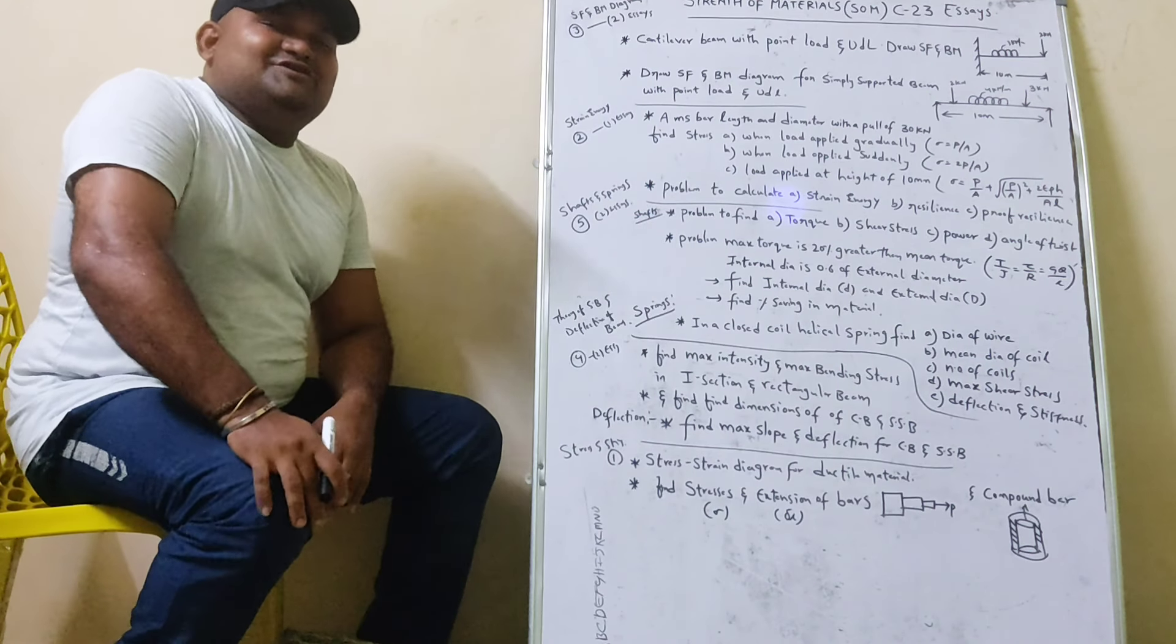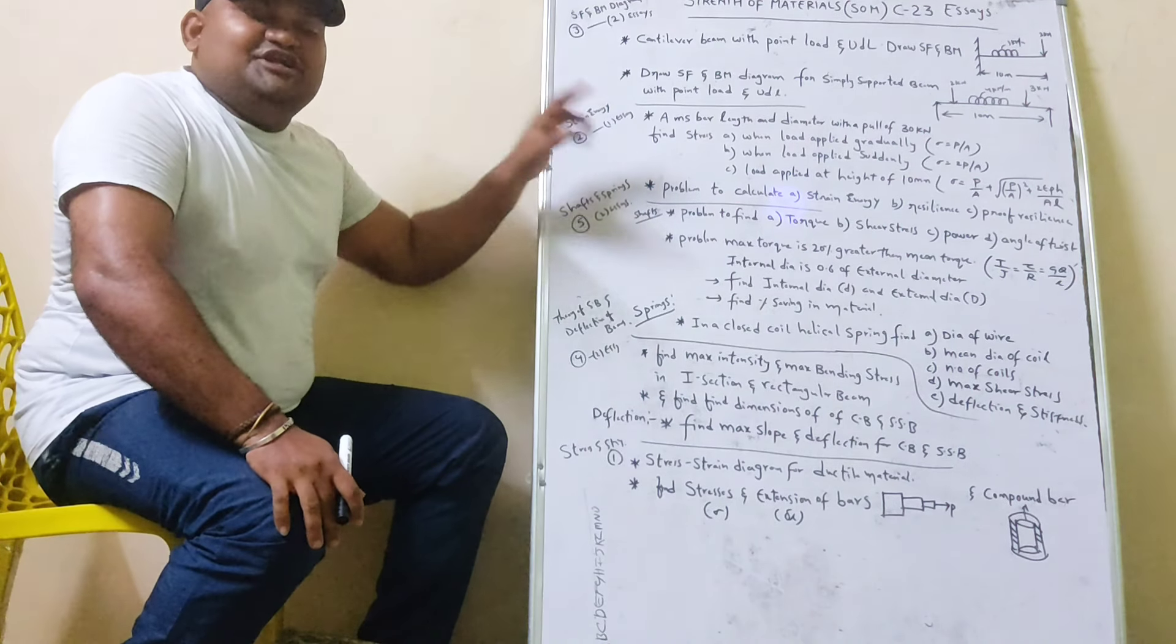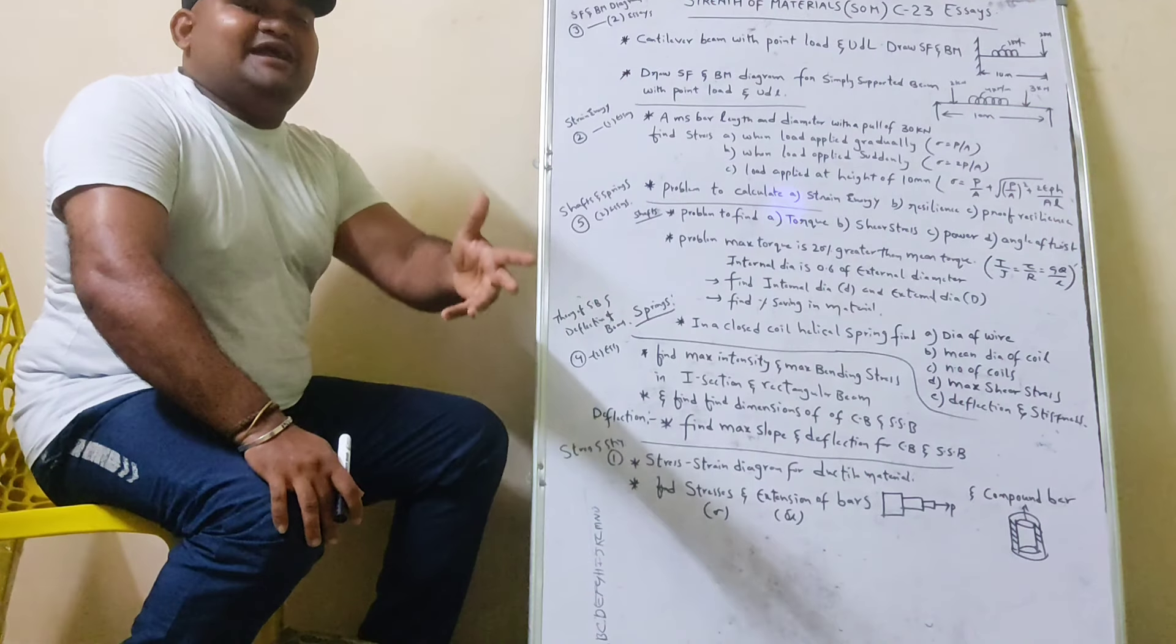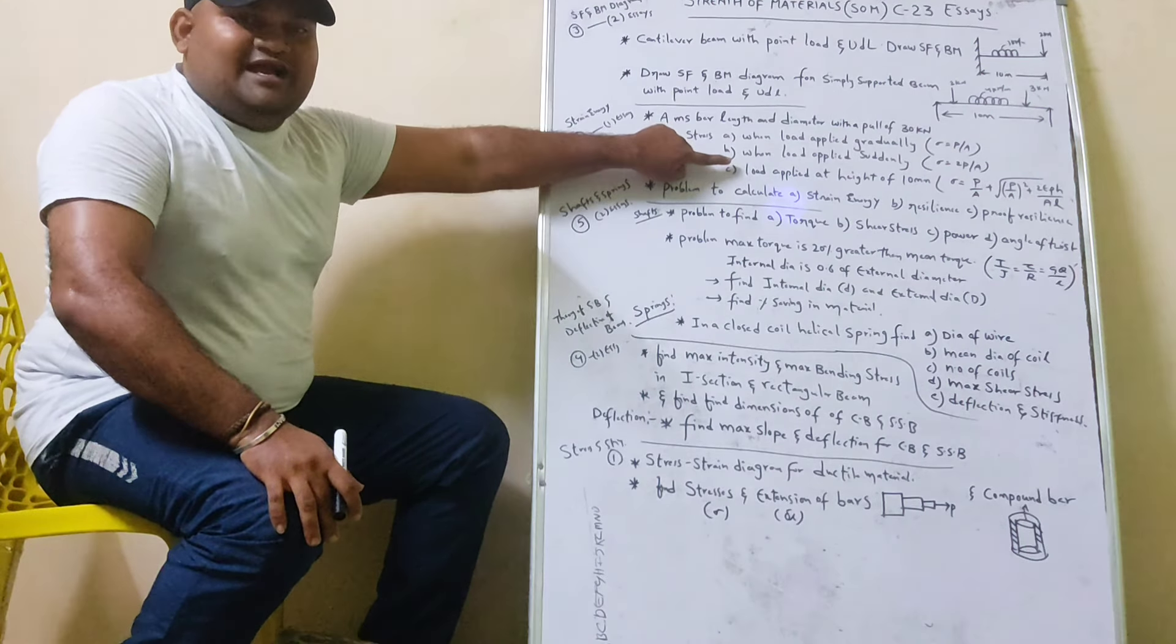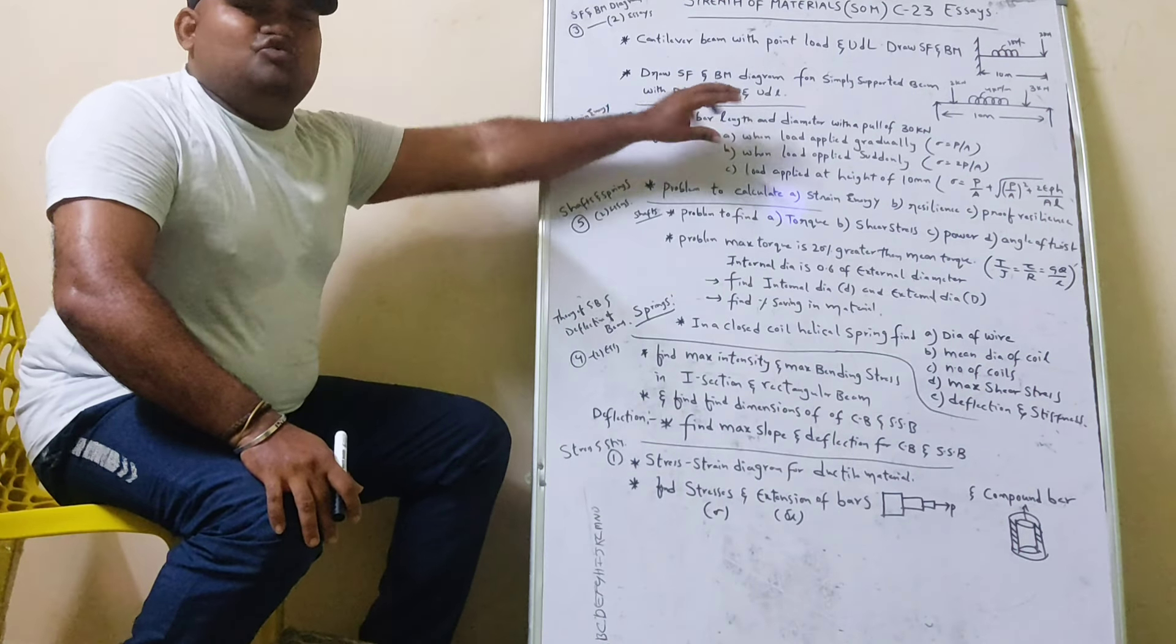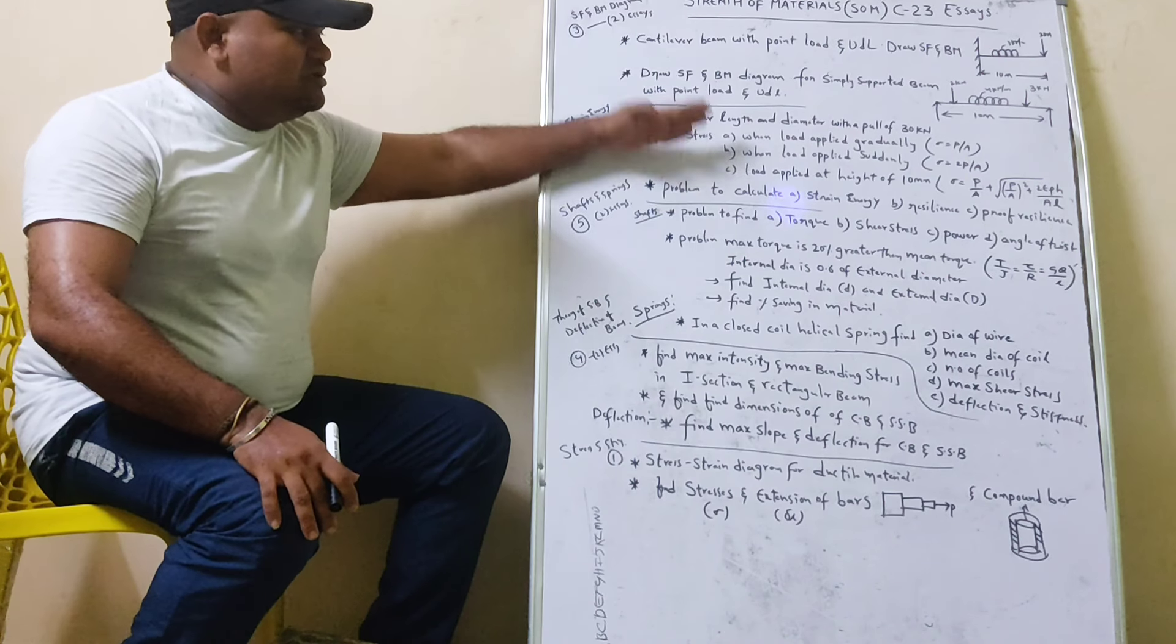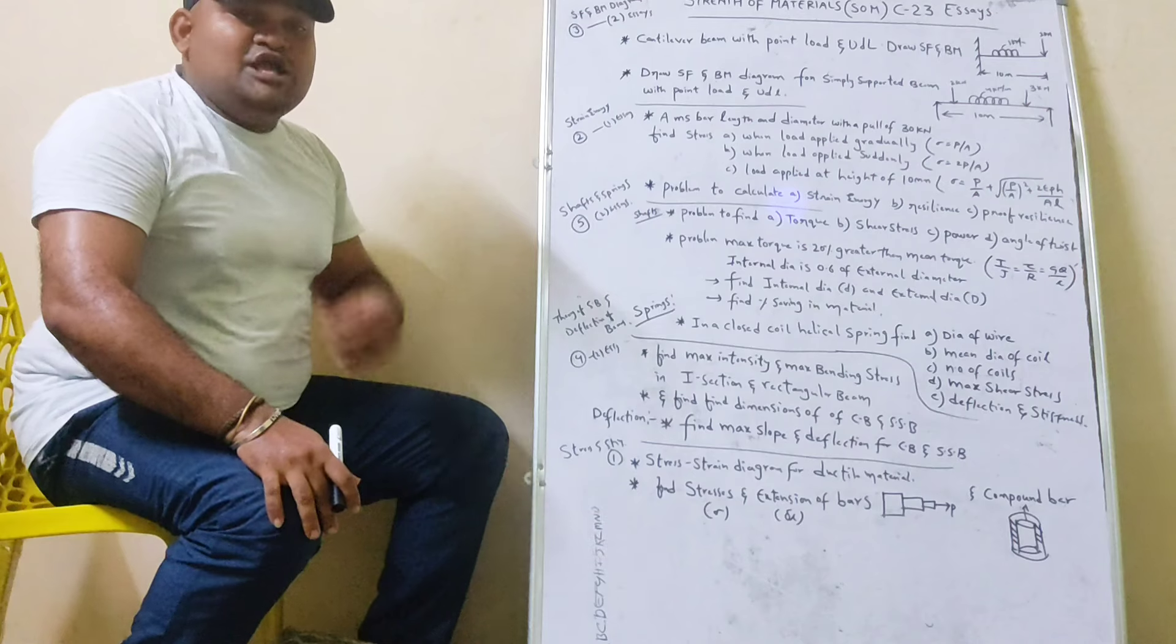Second most important chapter. I'm saying that there are three types of loads. One is gradually applied and suddenly applied. Three is the impact. Gradually applied and P by A formula. Suddenly applied and 2P by A formula. And the impact of P by A plus root of P by A whole square plus 2EPH by A.